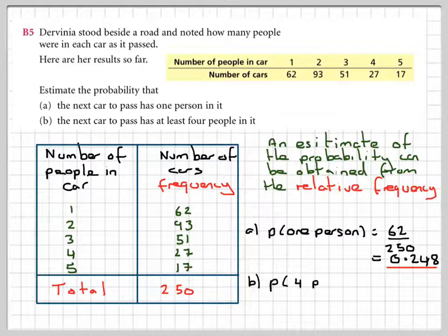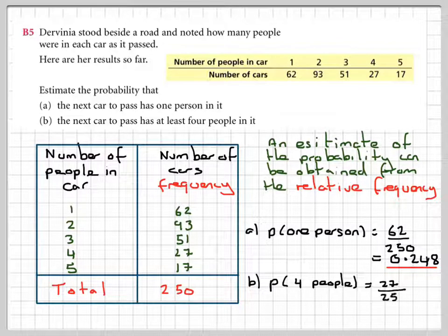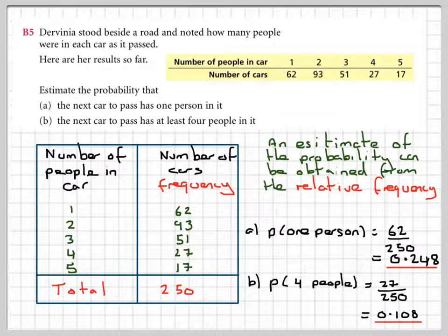The probability of four people in the car, that's going to be 27 divided by 250, which is equal to 0.108.